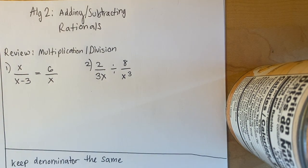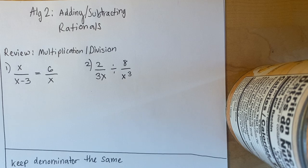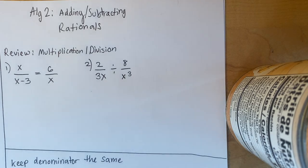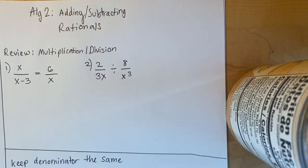Hello, Algebra 2 students. This is Mr. Fleming coming to you with another lecture. So this week we're going to be learning about adding and subtracting rationals — remember that rationals means anything with a fraction. On Google Classroom, I have posted a notes template for this lesson, so you want to make sure you have that ready as you listen to this video. Make sure to pause and rewind if you want to double-check something.